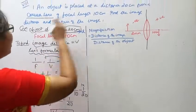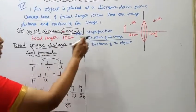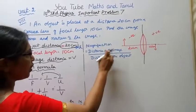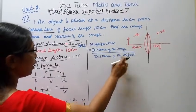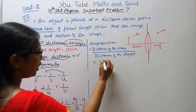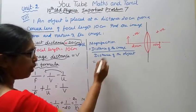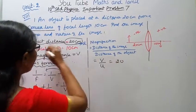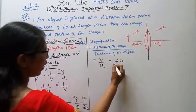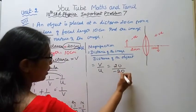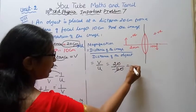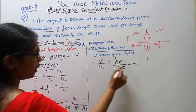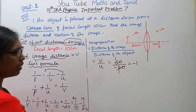Now we have found the image distance. For magnification: m = v/u = 20/(−20). Cancelling 20, that gives us −1. So magnification is −1.